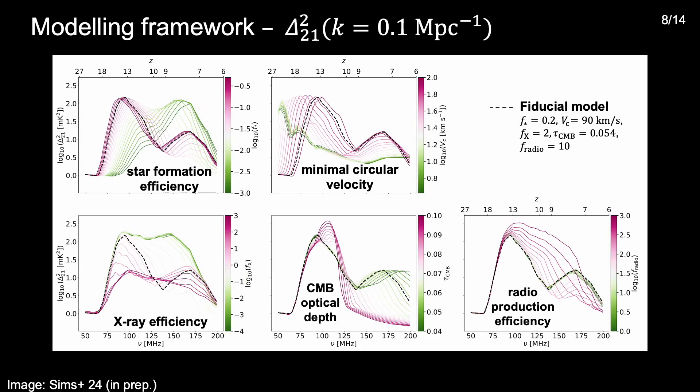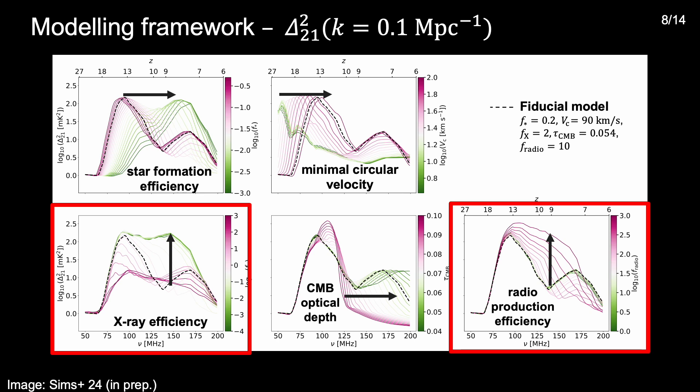We find a similar story with the 21cm power spectrum, where the black dashed line shows a fiducial power spectrum that assumes the same parameter values as the global signal model. And again, the power spectrum is sensitive to changes in all of the astrophysical parameters, with the X-ray and radio production efficiencies scaling the power spectrum amplitude. And low X-ray and large radio production efficiencies producing the largest power spectra, that one should expect to be the first to be ruled out by existing 21cm power spectrum upper limits.